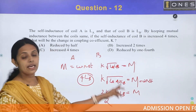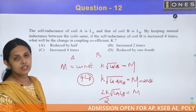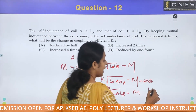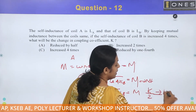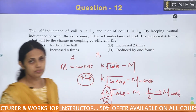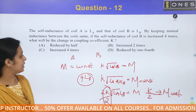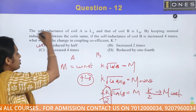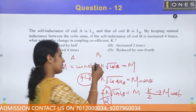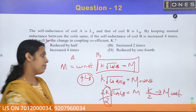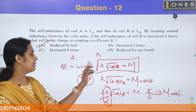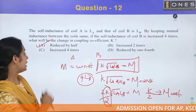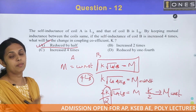If we divide by 2, what is the value of K? K divided by 2 — we keep M constant. K is reduced by half. The coupling coefficient is reduced by 50%. Option A is the correct answer.